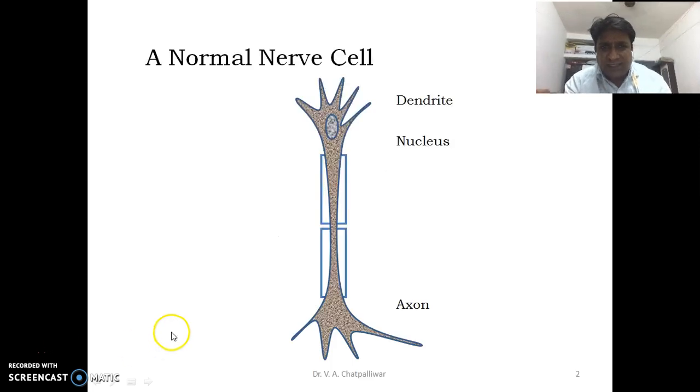Now, this is indeed a diagrammatic representation of a nerve cell. Nerve cell is also called as neuron. A neuron is nucleated. It contains dendrites, these parts. It is myelinated and this terminating part is called as axon.